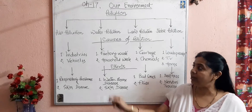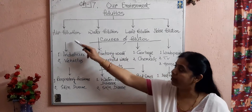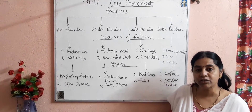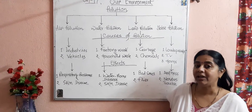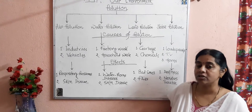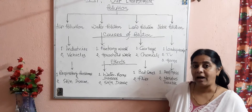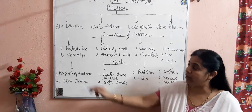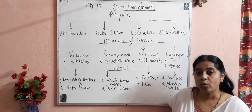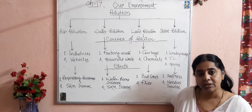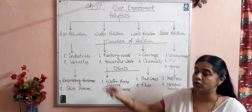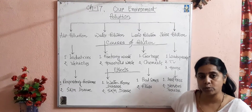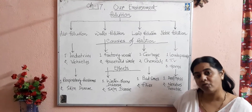First, let us study the causes of air pollution. Increase in population leads to increase in industries, which release harmful gases and smoke and pollute the air. Next, vehicles: we need more vehicles to meet our needs, and vehicles also emit harmful gases and smoke to the atmosphere. This is also one cause of air pollution.